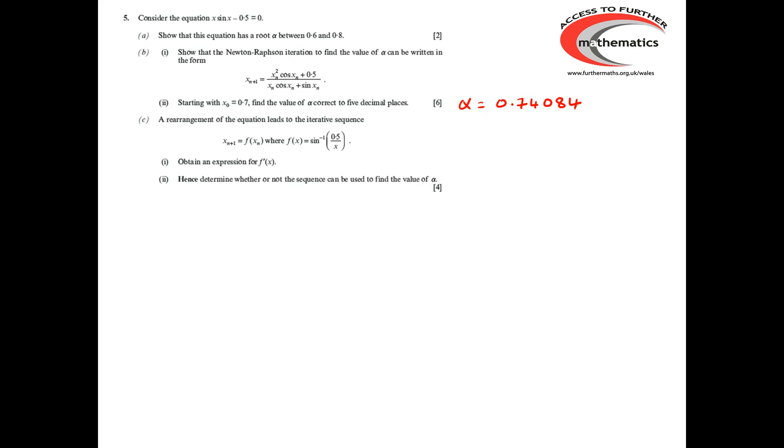Moving to the final part of the question, we're told that the original equation can be rewritten as we've got the iteration x_(n+1) = f(x_n), where f(x) is sin⁻¹(0.5/x). So we're first of all asked to find an expression for f'(x) and then decide whether or not this iteration can be used to find the value of alpha. To differentiate f(x), we need to use the chain rule. So, the derivative of 0.5/x is -0.5/x². The derivative of sin⁻¹ of something is 1 over the square root of 1 minus the something squared. So, we have there the result of using the chain rule to differentiate f(x).